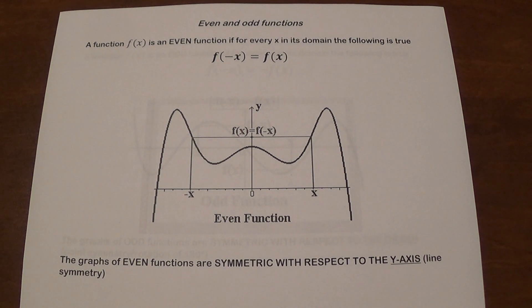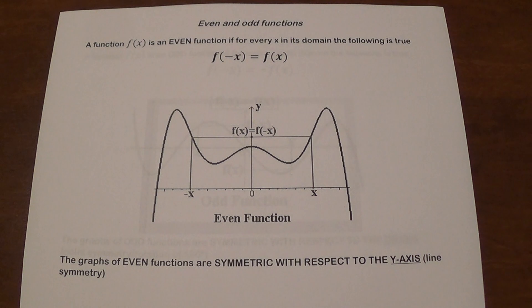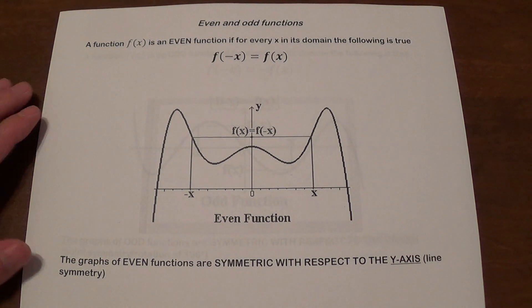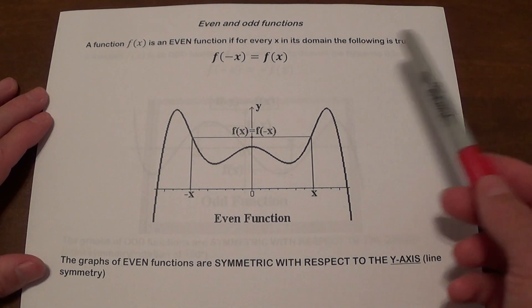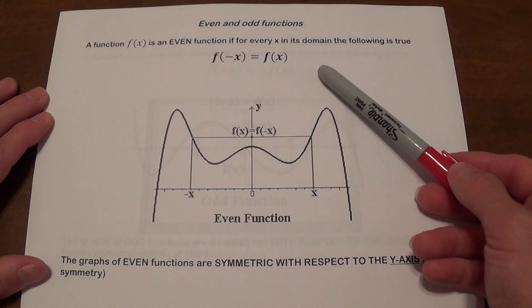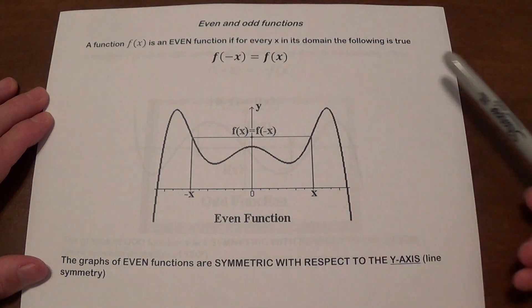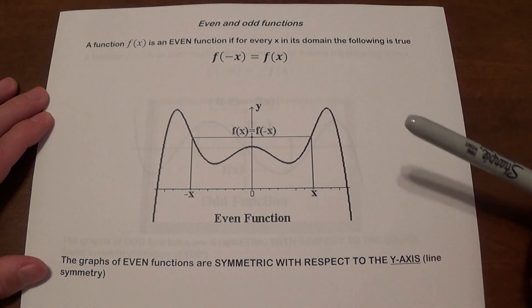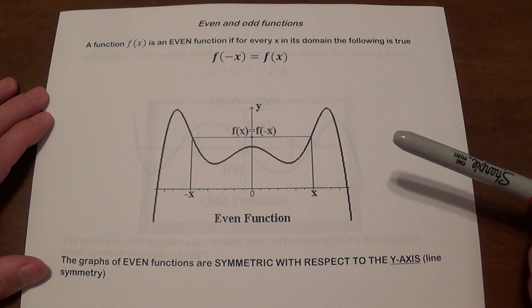Today we're going to talk about even and odd functions. Let's start with an even function. A function is going to be even if for every x in its domain the following is true: f of negative x is going to be the same as f of x.